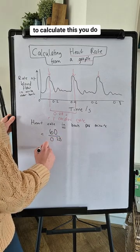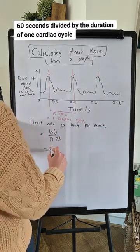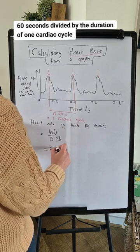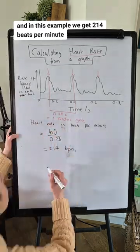To calculate this, you would do 60 for 60 seconds divided by the duration of one cardiac cycle, and in this example we get 214 beats per minute.